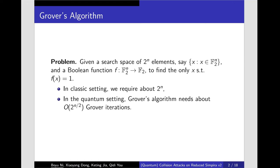In classical setting, we require about 2^n to find x, but in the quantum setting.